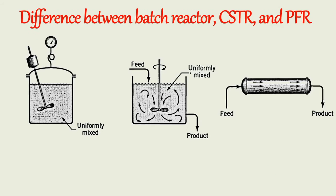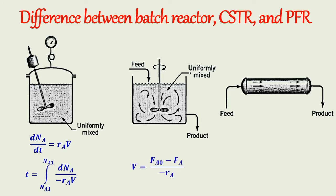For the batch reactor, the mole balance equation in differential form is: dNA/dt = rA·V. And in integral form is: t = ∫(NA0 to NA1) dNA / (−rA·V). For CSTR, the mole balance equation in algebraic form is: V = (FA0 − FA) / (−rA). For PFR, the mole balance equation in differential form is: dFA/dV = rA. And in integral form is: V = ∫(FA0 to FA1) dFA / (−rA).